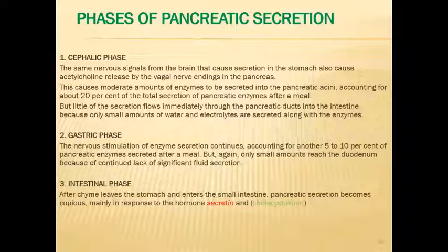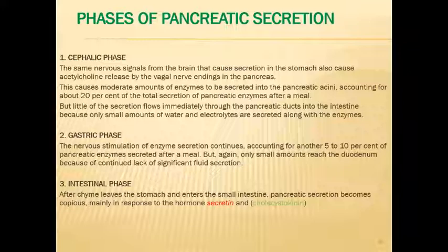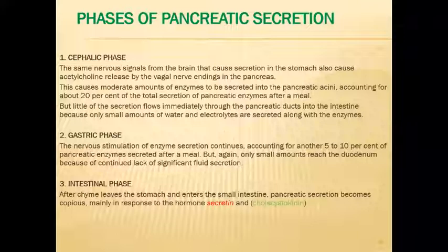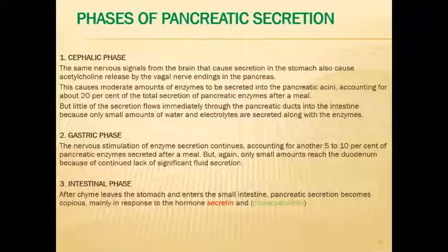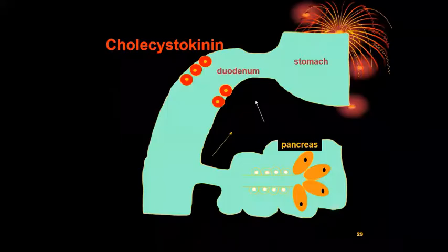During the intestinal phase, when chyme enters the small intestines, pancreatic secretion becomes copious mainly in response to secretin and cholecystokinin. Secretin causes the ductal cells to release electrolytes, bicarbonate, and water. Cholecystokinin stimulates the acinar cells to release enzymes. With more enzymes, more electrolytes, and more water secreted, the quantity increases significantly. The secretions are transported via the duct system through the sphincter of Oddi into the duodenum to neutralize acid and begin digestion.